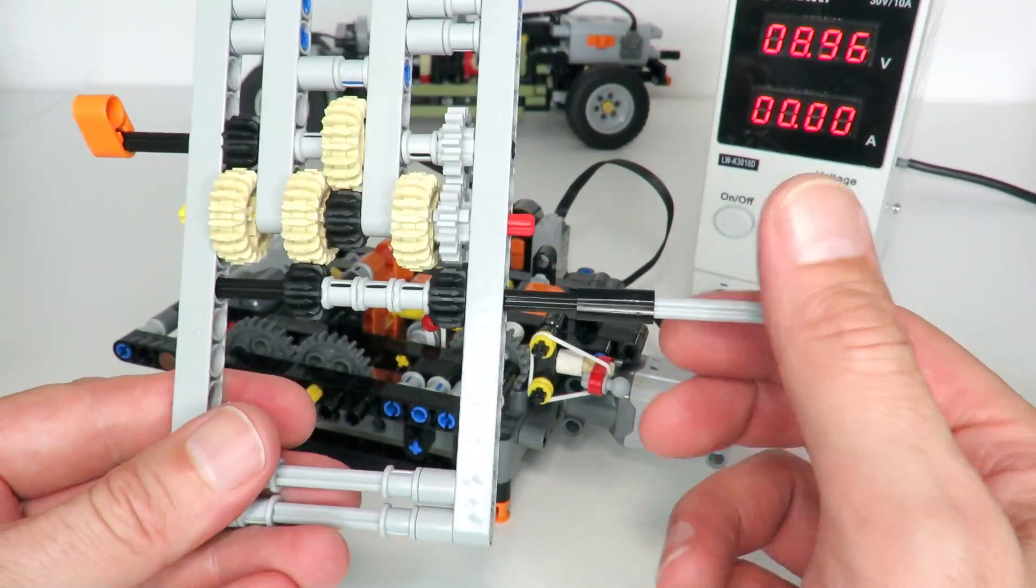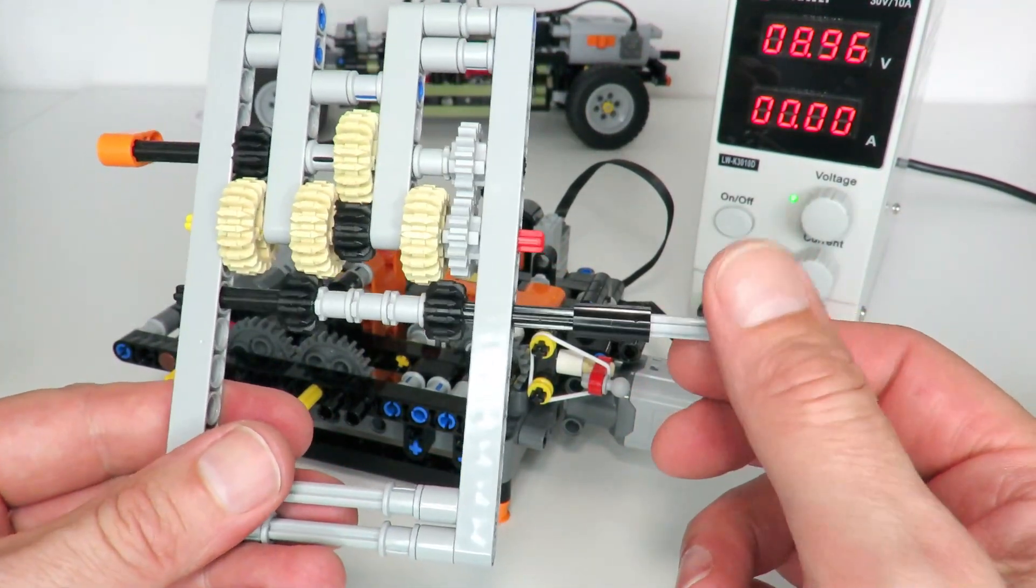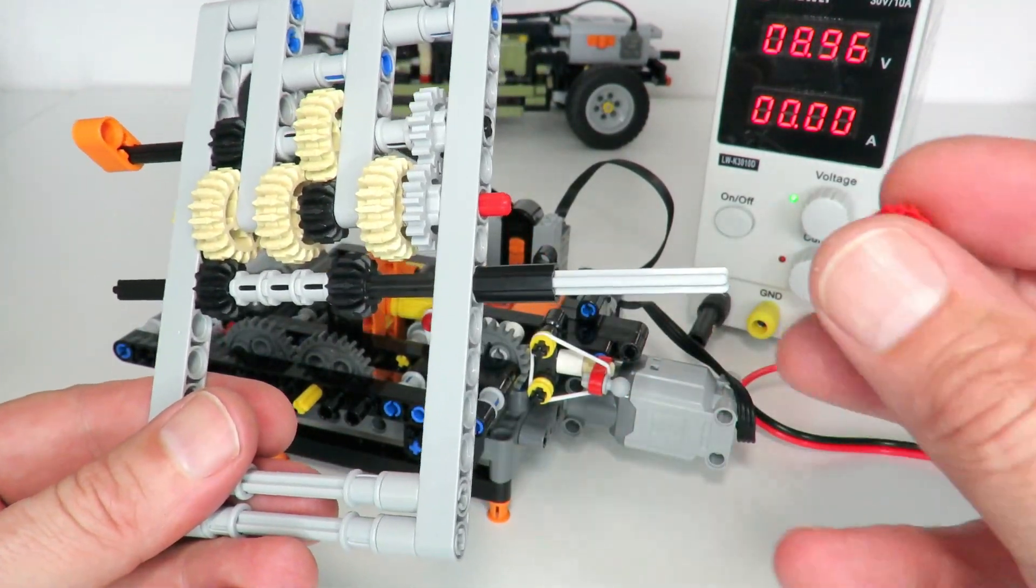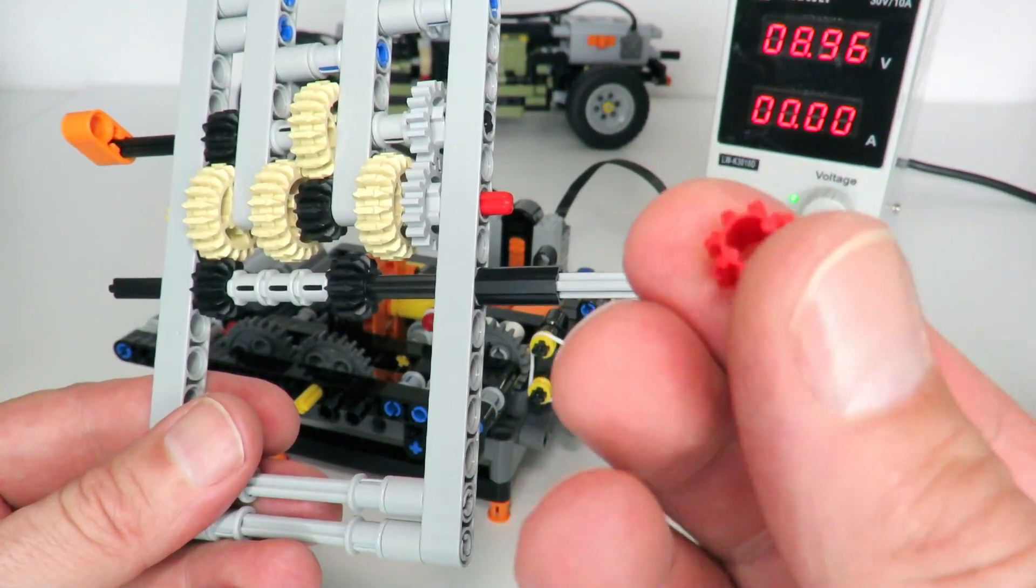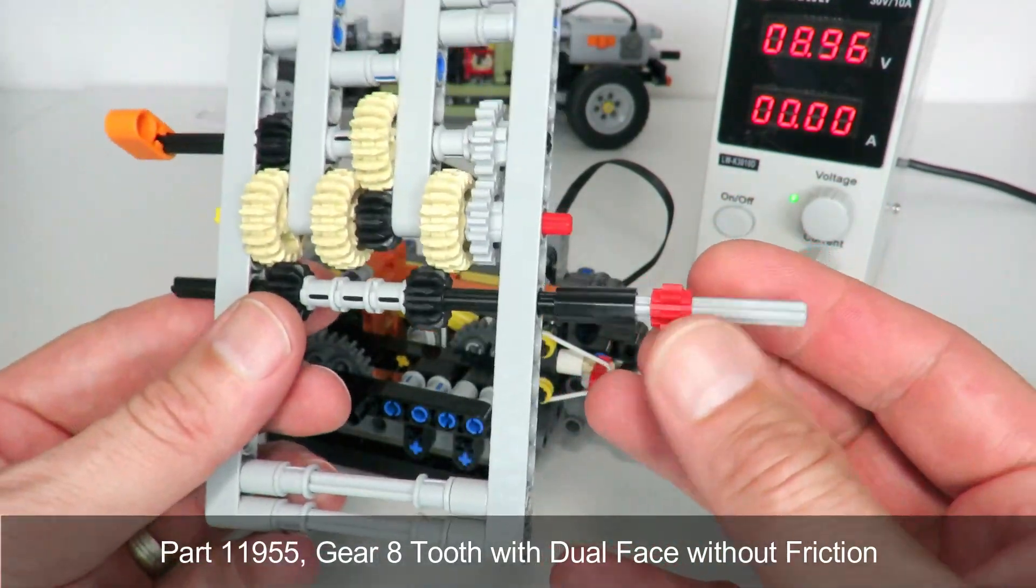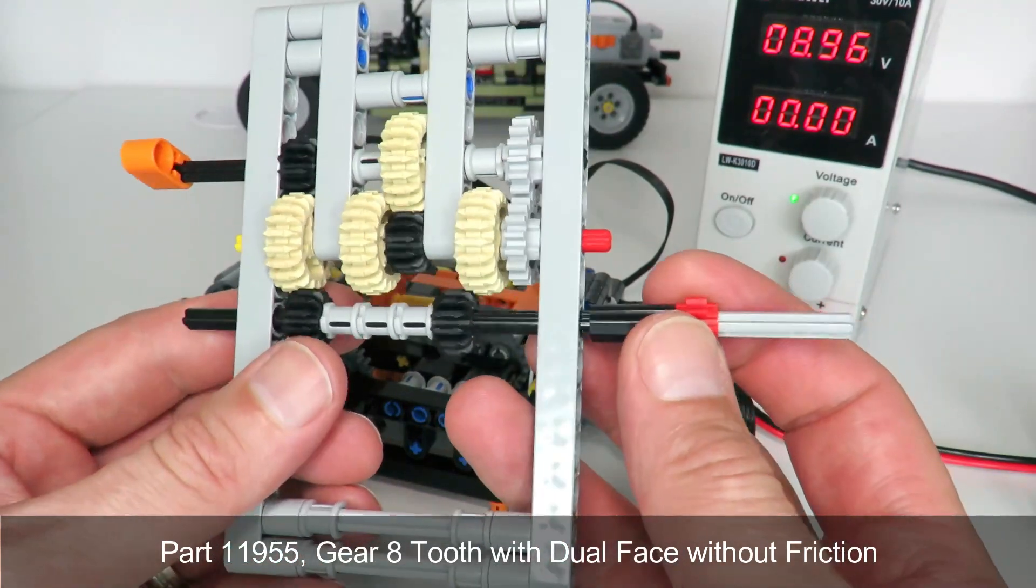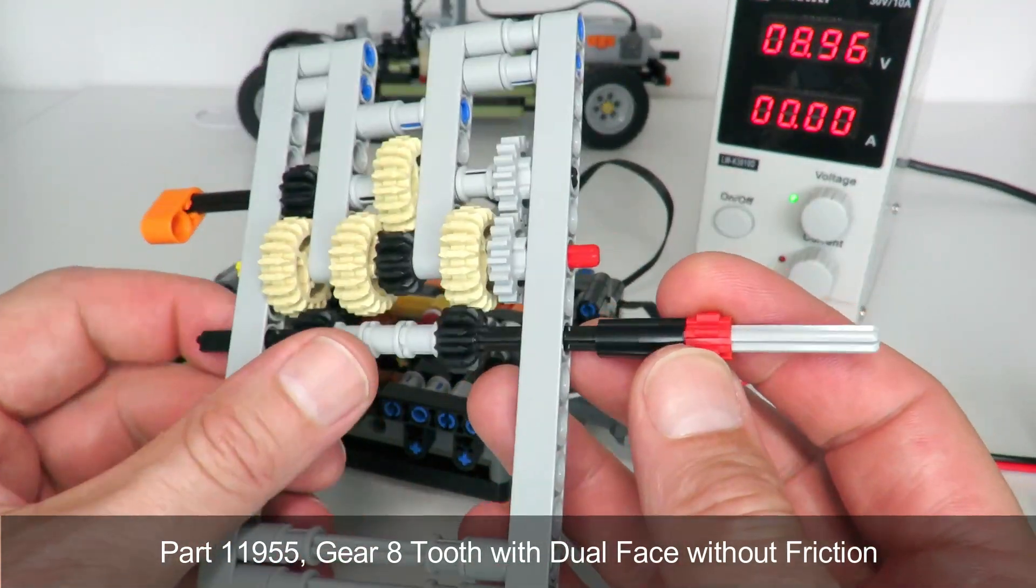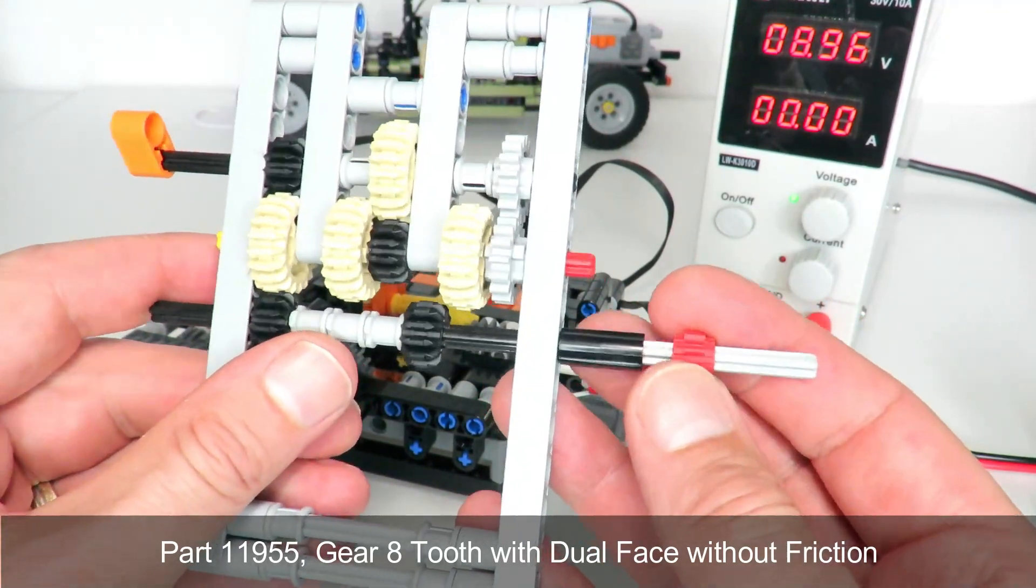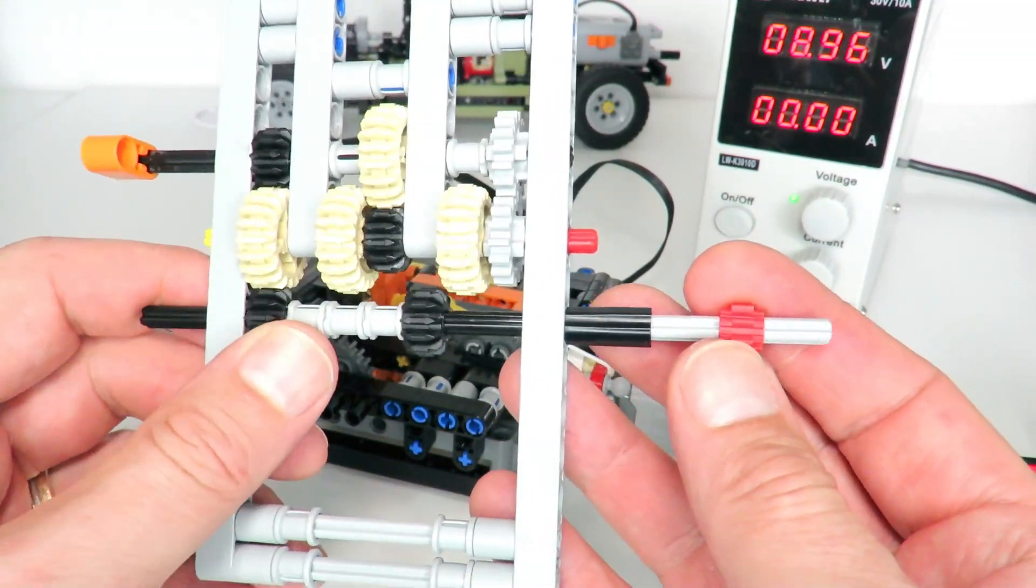Now the other issue we need to solve is how do we rotate this driving axle and still have it movable like that. Now there's two solutions that I know of. One is to use one of the red eight tooth gears and put on the axle like this. And what that means is because it's got no friction we can kind of still move the axle in and out and drive and rotate the output at the same time. So that is one way of doing it.